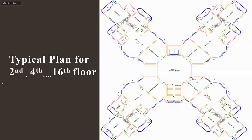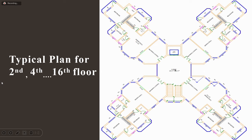This is the typical plan for the even floors — that is, the second floor, fourth floor, up to the 16th floor. Each tower has 16 residential floors. Each even floor has four flats of 2BHK. A lobby connects these four flats of 2BHK, and there is a lift with staircases opposite to it.